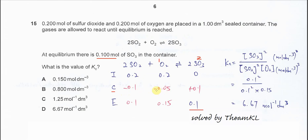We sum up the initial and change: 0.2 plus negative 0.1, so we get 0.1. For oxygen, 0.2 plus negative 0.05, so we get 0.15.